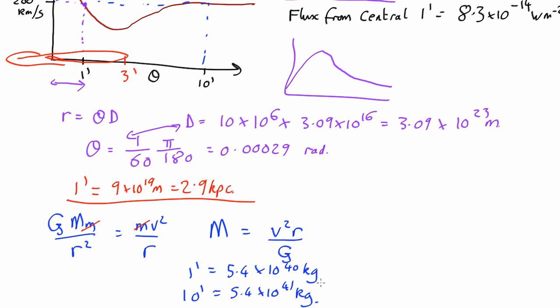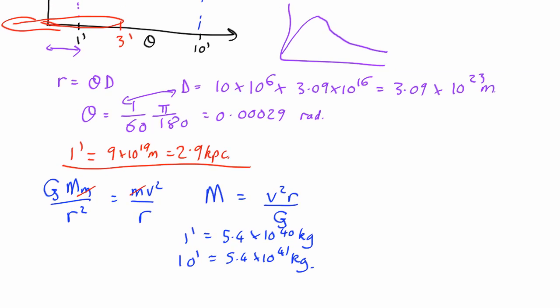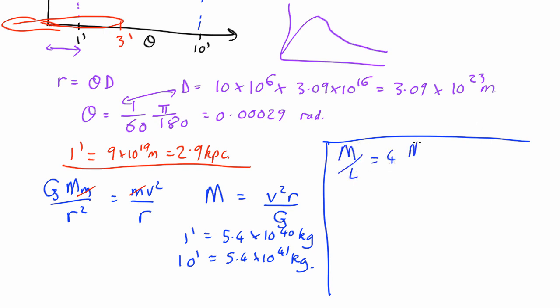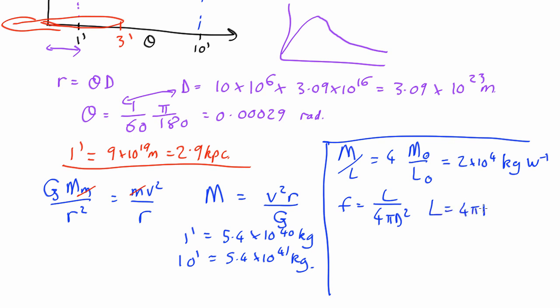So does that prove there's dark matter? Not really, because it could be that this mass is coming from stars. To estimate the stellar mass, we know the flux from the central 1 arcminute. Let's assume the mass-to-light ratio is 4 times the solar mass-to-light ratio, which is about 2 times 10 to the 4 kilograms per watt. We need to work out how many watts of luminosity we're getting from the central 1 arcminute. We know that flux equals luminosity over 4 pi d squared, so luminosity equals 4 pi d squared times the flux.